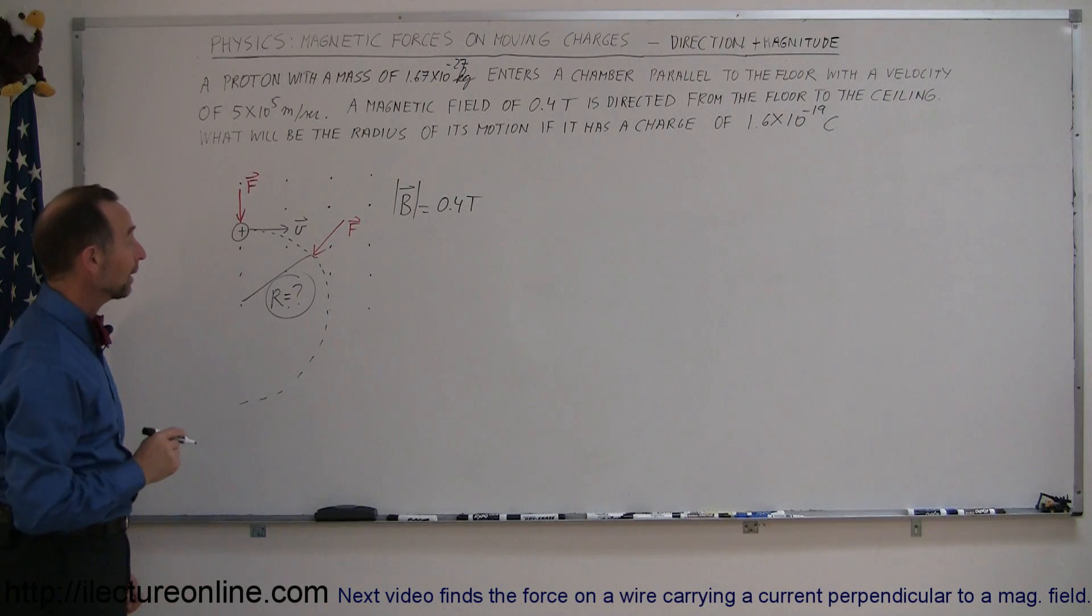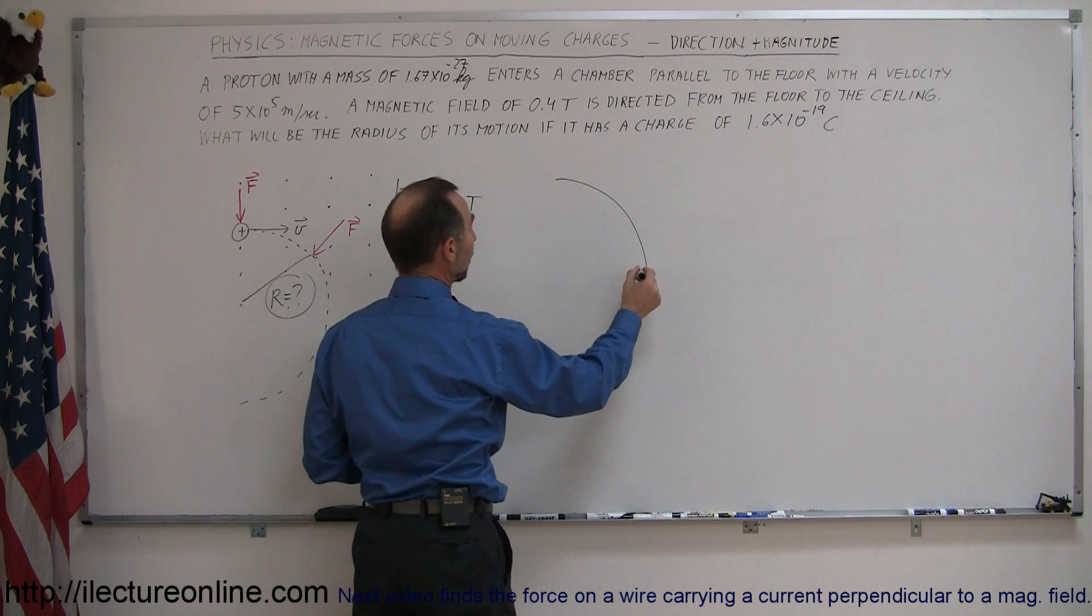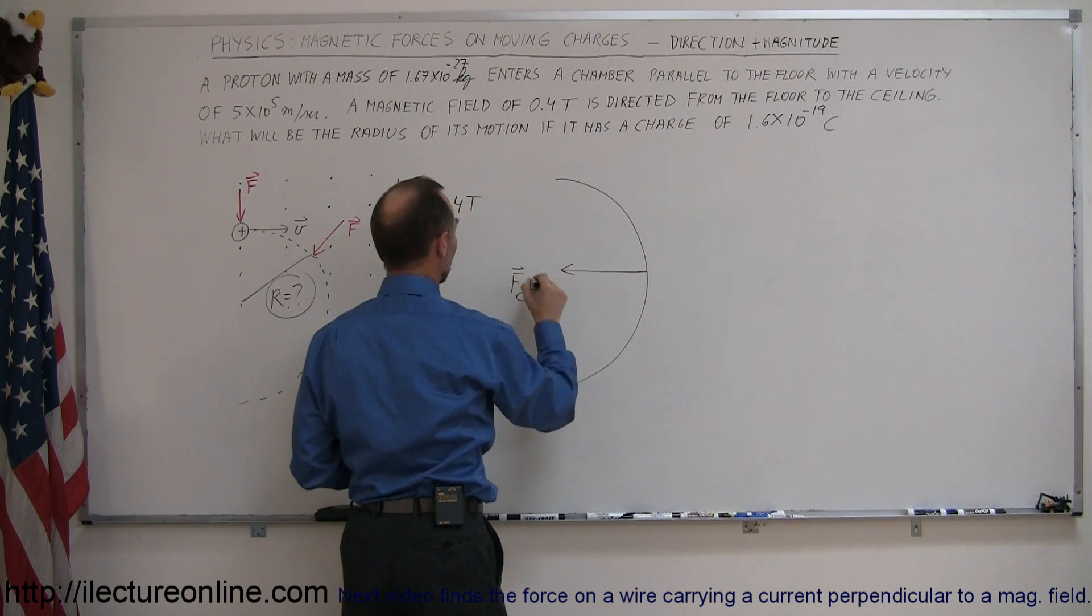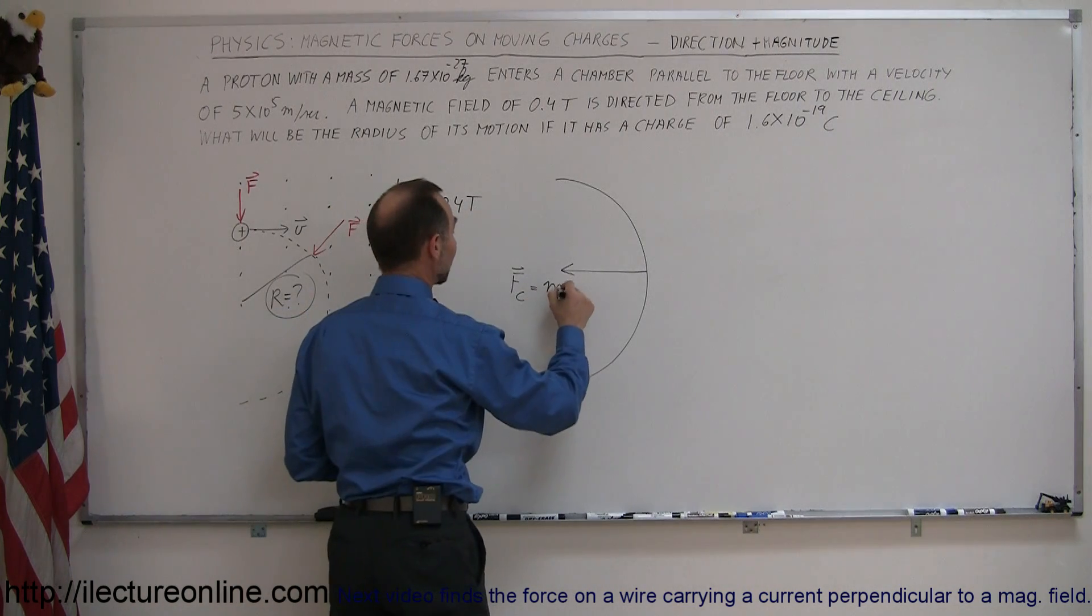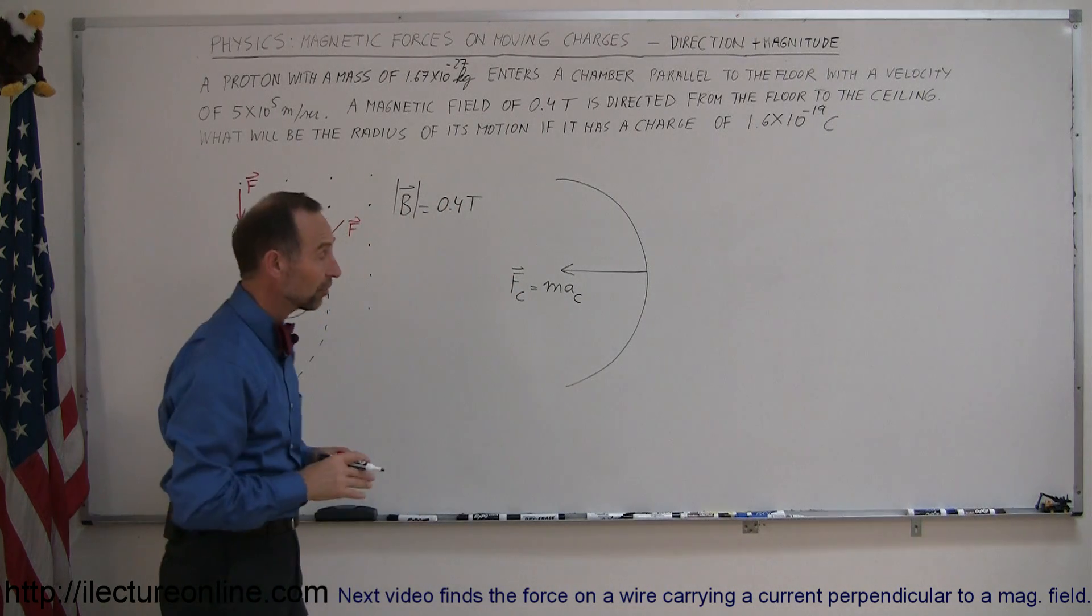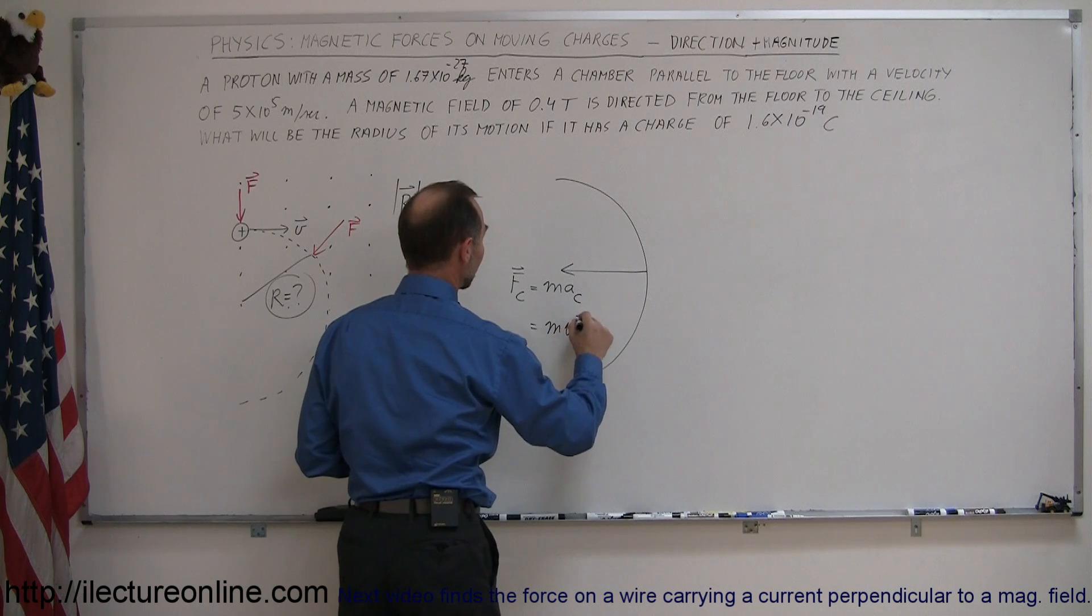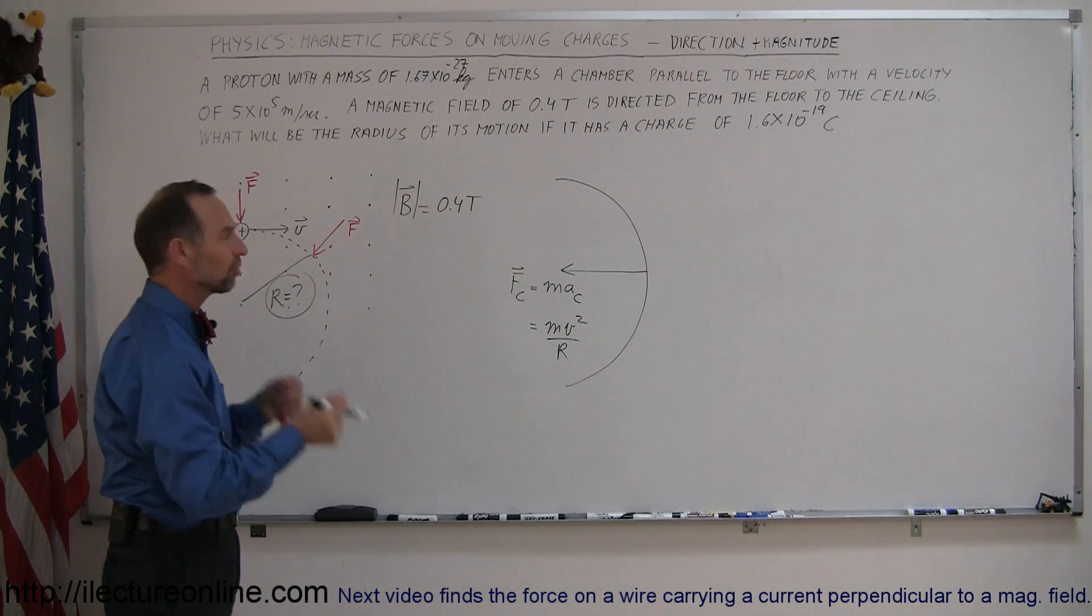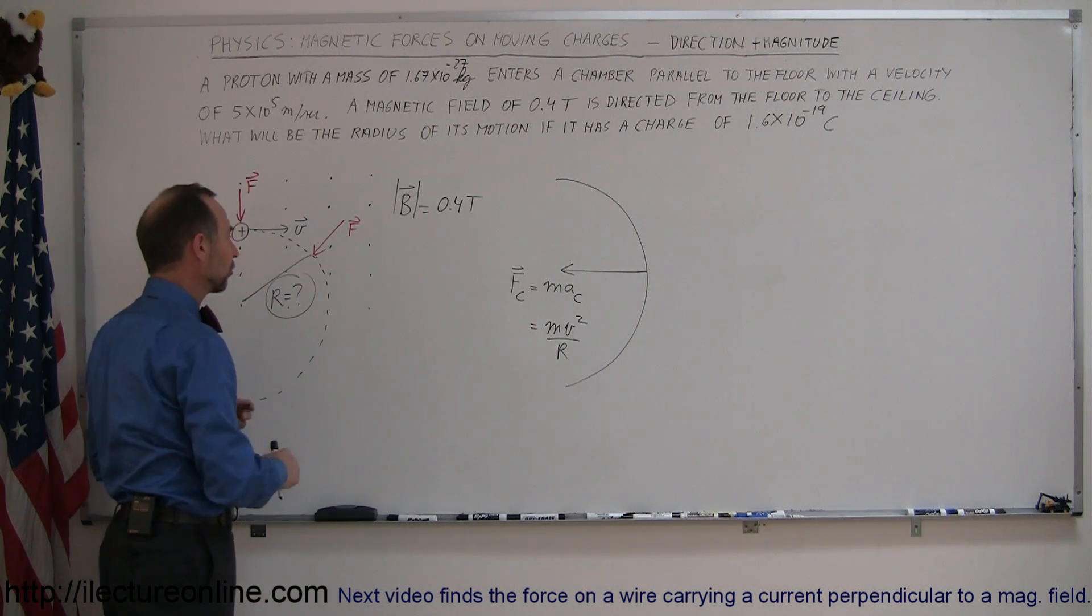The way you do that then is to realize, back from mechanics, that whenever something goes around in circles, it does so because there's some centripetal force, F centripetal, which of course, according to Newton's second law, is equal to M times A, mass times acceleration. Of course, in this case, it's a centripetal acceleration, and the definition of the centripetal acceleration is M V squared over R. And then you say, well, what is causing that centripetal acceleration? What is causing that force, causing it to move around in a circle?